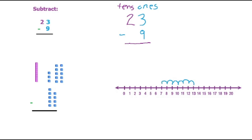5, 6, 7, 8, 9. So we know that 13 minus 9 is 4.